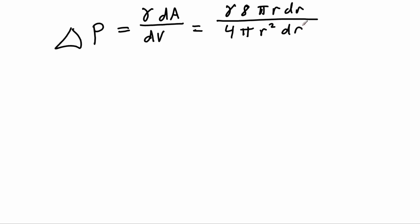And we can see that most things are going to cancel here. We can cancel our π's, we can cancel 4 and 8 and that's going to give us a factor of 2, and we can cancel our drs and all but one factor of r. So we get a much simpler expression: delta P is equal to 2γ over r, and of course this is for spherical drops.